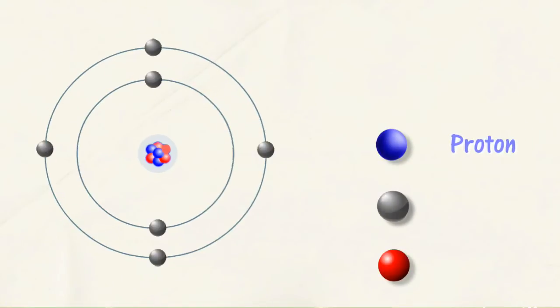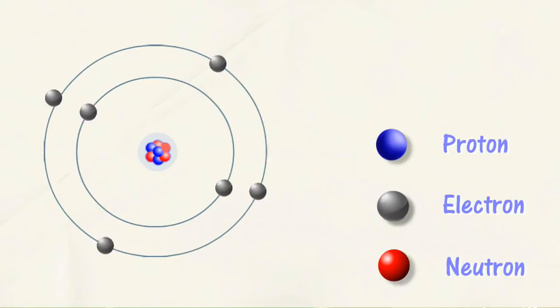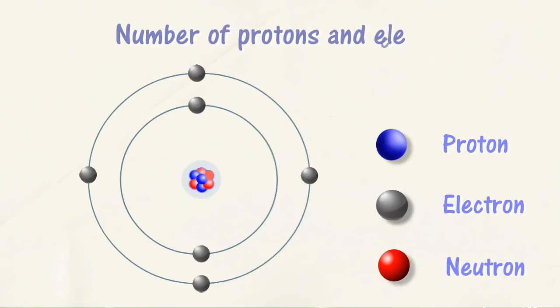Protons are positively charged, electrons are negatively charged, while neutrons are neutral. The number of subatomic particles of atoms of different elements is different.